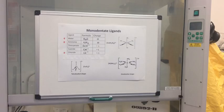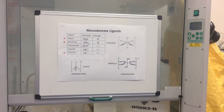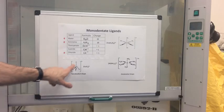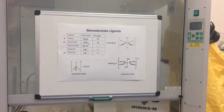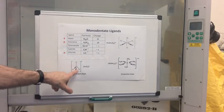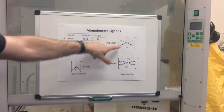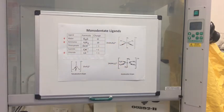One thing to mention is coordination number. Coordination number is the number of coordinate bonds to the central metal ion. Sometimes people get confused and think it's the number of ligands — it's not. The coordination number of CuCl₄²⁻ is four because there are four dative covalent bonds going to the central ion, and the two octahedral complexes both have coordination numbers of six.